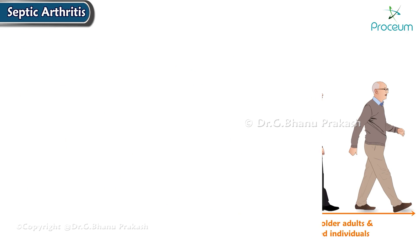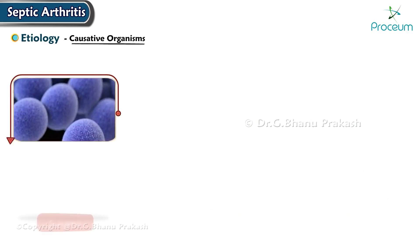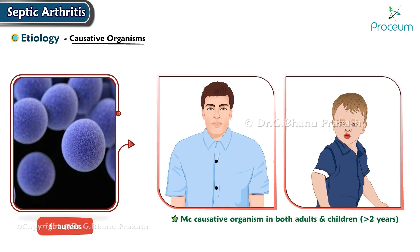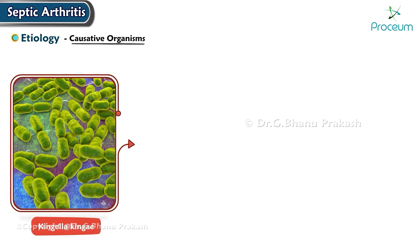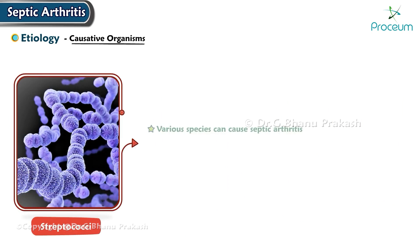Causative organisms of septic arthritis include Staphylococcus aureus, the most common causative organism in both adults and children older than two years, frequently associated with septic arthritis following invasive joint procedures. Kingella kingae is most common in infants and children up to two years of age, recognized as an important pathogen in this age group. Various species of Streptococcus can also cause septic arthritis.